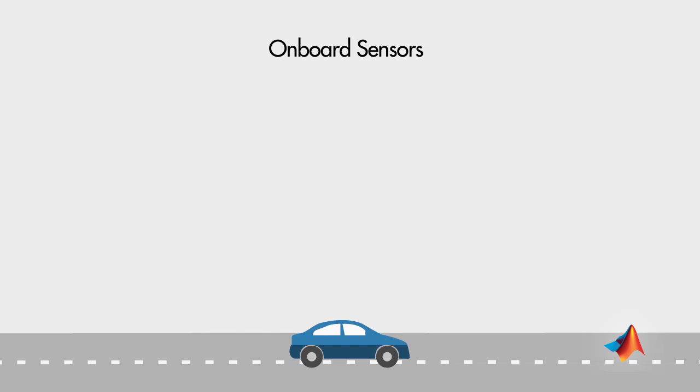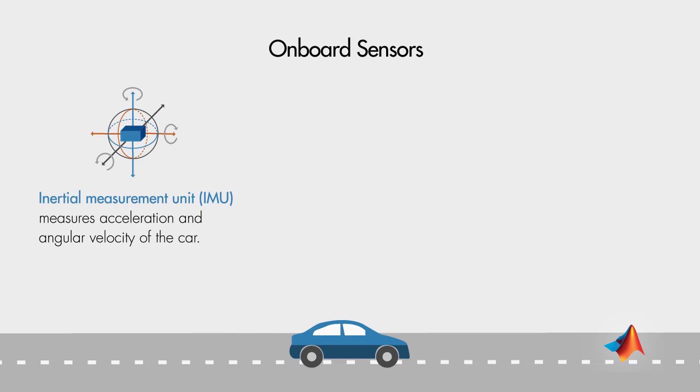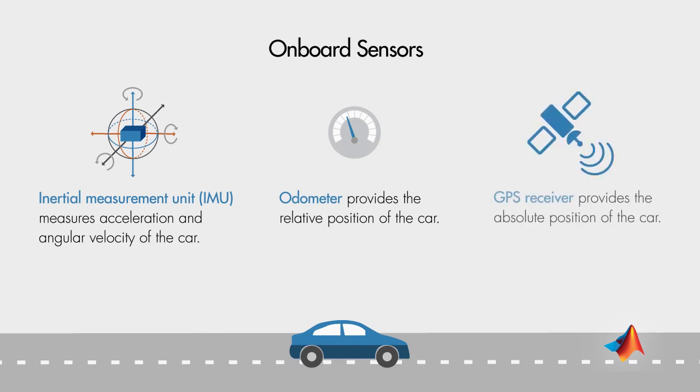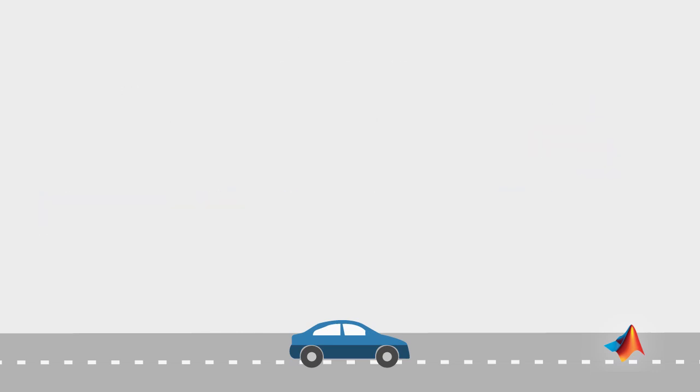Let's look at the sensors you have on board which help you find your position and navigate you to the airport. The inertial measurement unit uses accelerometers and gyroscopes to measure the car's acceleration and angular velocity. The odometer measures the relative distance traveled by the car. The GPS receiver receives signals from satellites to locate the car on Earth's surface.